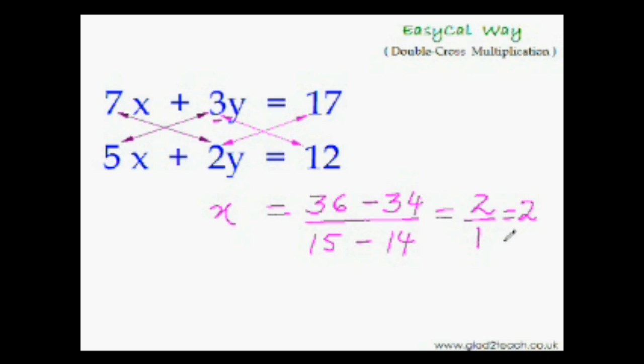So have you understood this method? We just have to cross multiply twice. Once on this side and second time on this side. And since we are cross multiplying twice, therefore this method is called double cross multiplication.